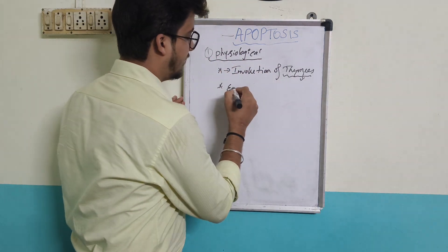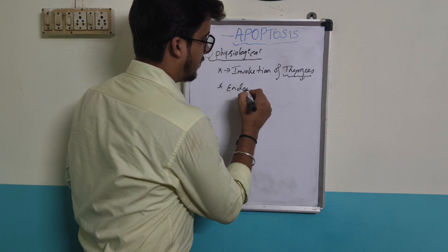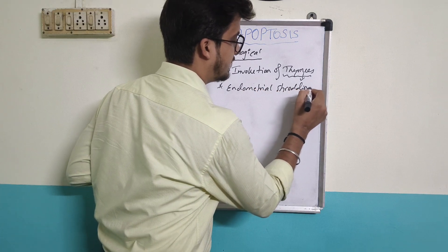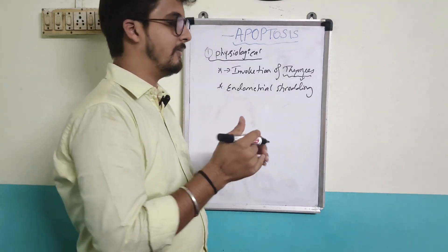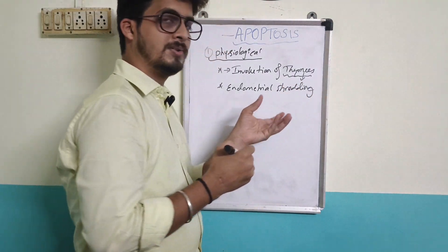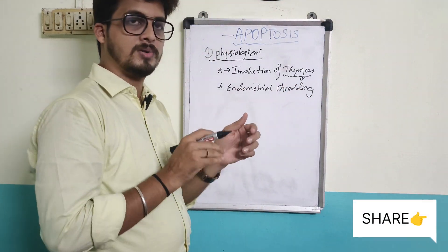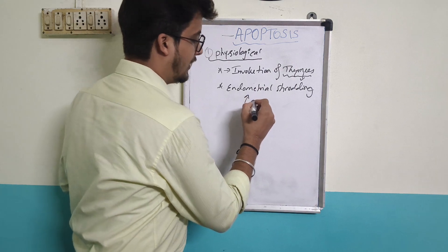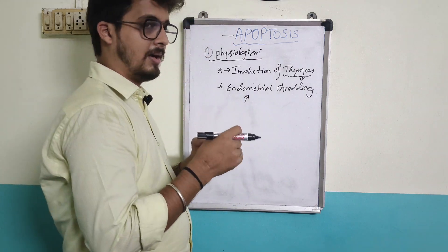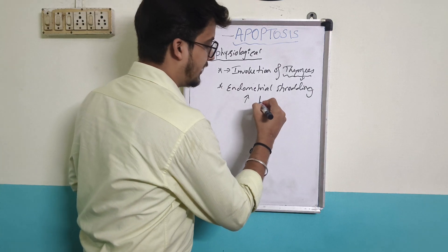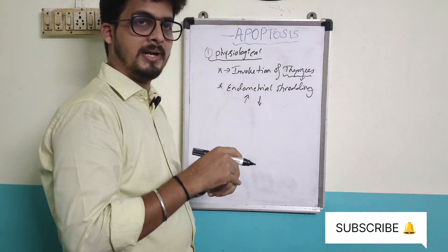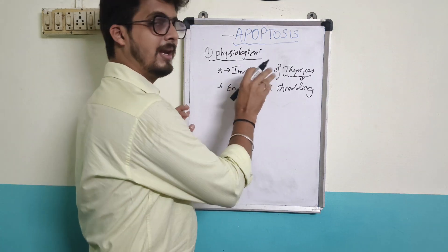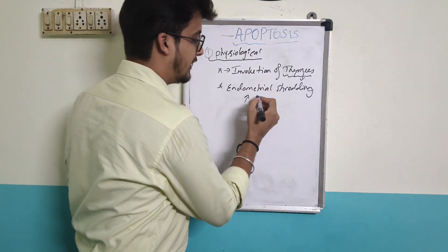The second example of physiological apoptosis is endometrial shedding. Every menstrual cycle, it is hormone dependent. The endometrial thickness builds up during the endometrial cycle, and then there is a physiological discharge — that is endometrial shedding.